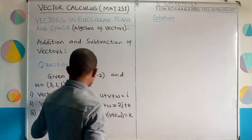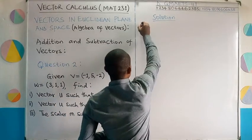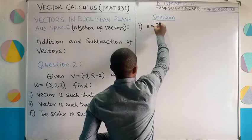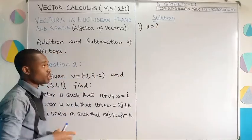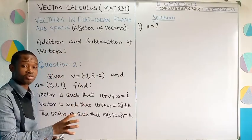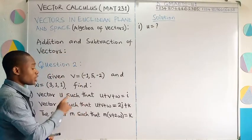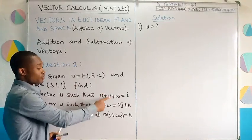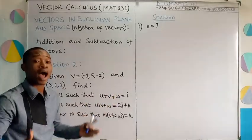So we are looking for vector u, we don't know. But we are given the condition under which we are to find vector u. That's the interesting thing about this part i of question 2. The condition under which we are to find u is that u + v + w is equal to what? i.